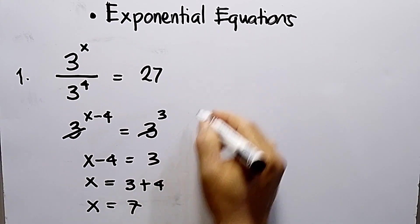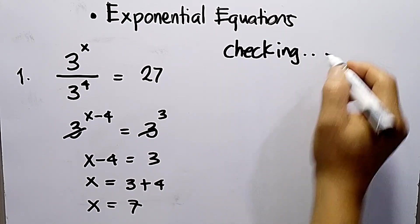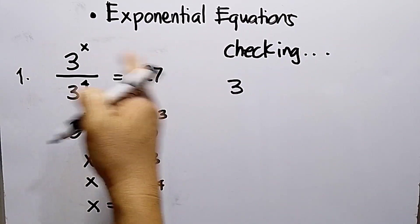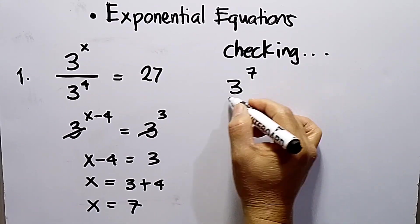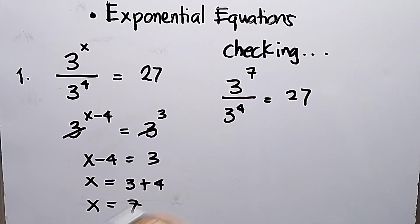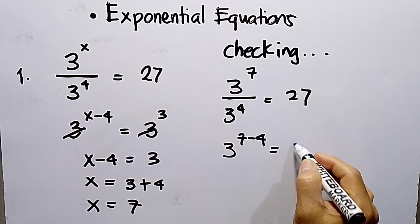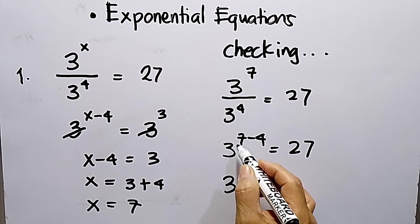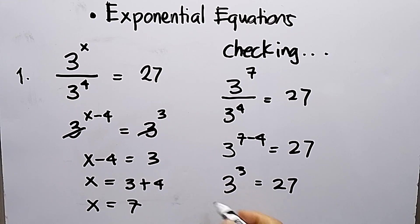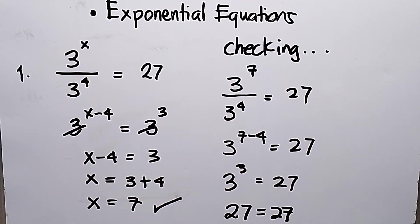The value of x is 7. Now, checking — you have to substitute into the given equation. This will be 3 raised to the 7th power divided by 3 to the 4th power equals 27. By the laws of exponents, this becomes 3 raised to the power of 7 minus 4, which equals 27. Since 7 minus 4 is 3, we get 3 to the 3rd power equals 27, and indeed 3 to the 3rd power is 27. Therefore, number 1 is correct: x equals 7.